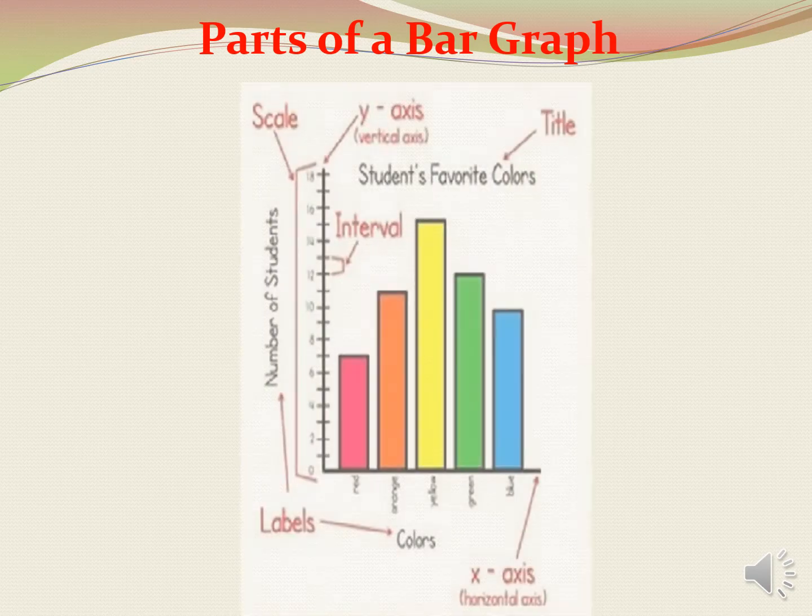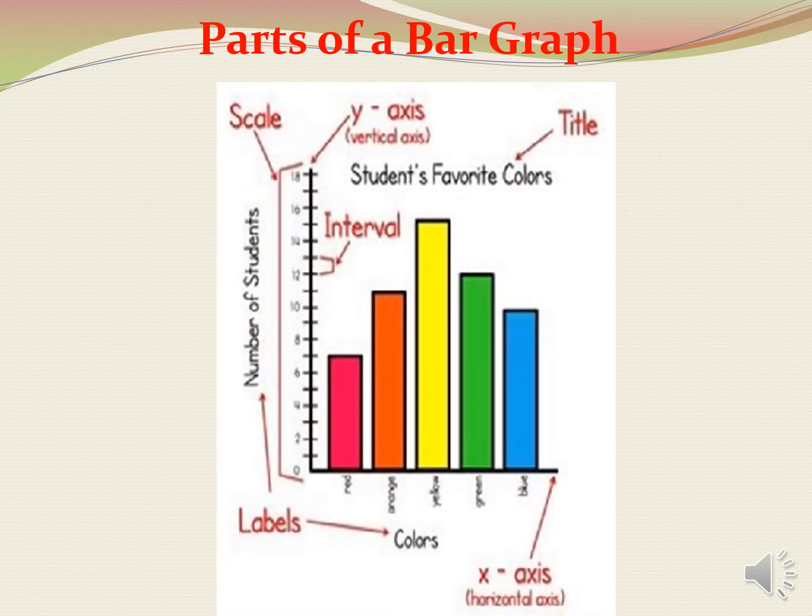Parts of a bar graph. There are three important parts of a bar graph. First, title. Second, labels. Third, scale.